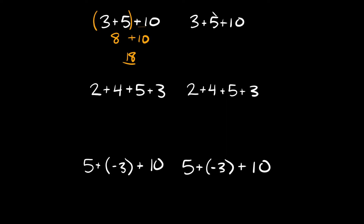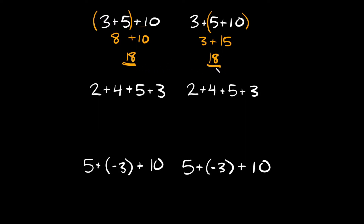Now what if I move my parentheses over here? Again I have 3 plus 5 plus 10, and this time I'm going to put them over the 5 plus 10 part. Start with the parentheses: 5 plus 10 is equal to 15, and then we'll bring down this 3 plus part. So 3 plus 15 again is equal to 18. As you can see you get the same answer either way — when you're just adding numbers together, it doesn't matter how you group it, you'll still get the same answer.